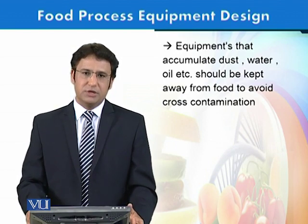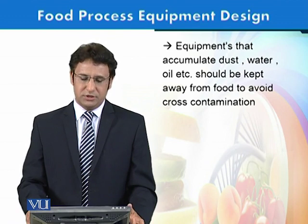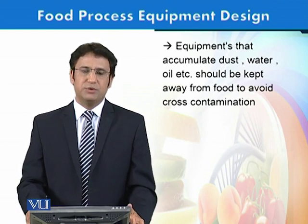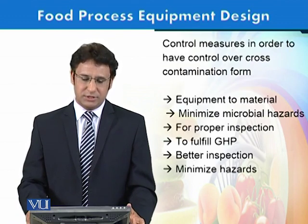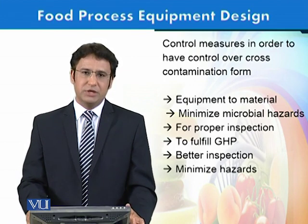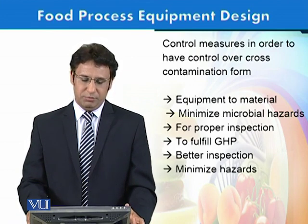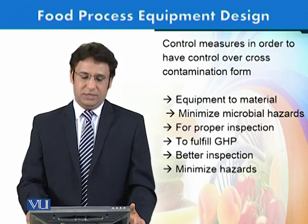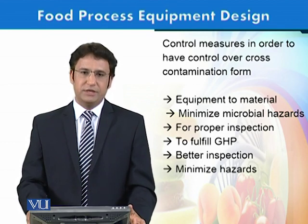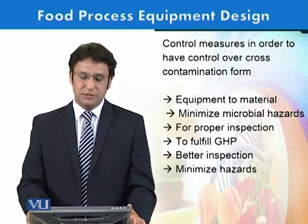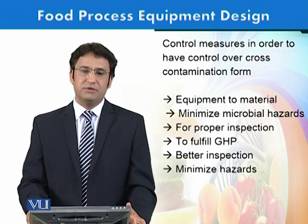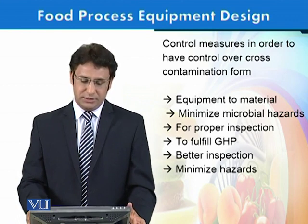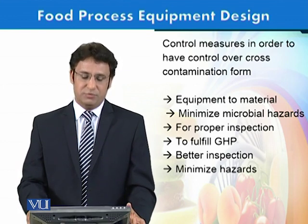Certain equipment prone to accumulating dust, water, oil, etc. should be put away from the main processing lines. In summary, the control measures are: equipment should allow less transfer from equipment to material, minimize microbial hazards, be designed for proper inspection, fulfill good hygiene practice principles, be visible for better inspection, and minimize hazards overall.